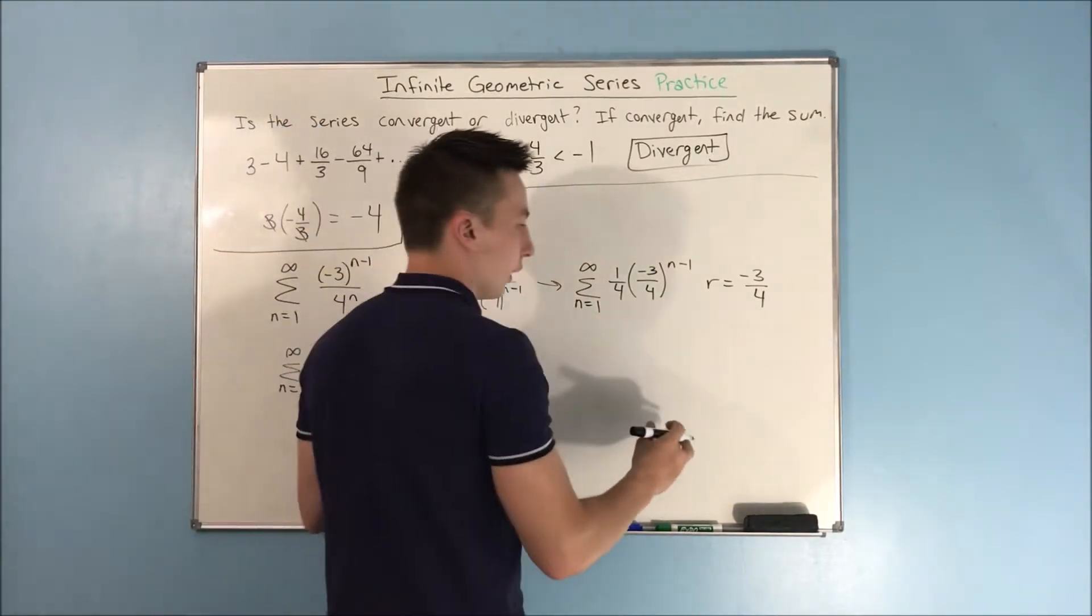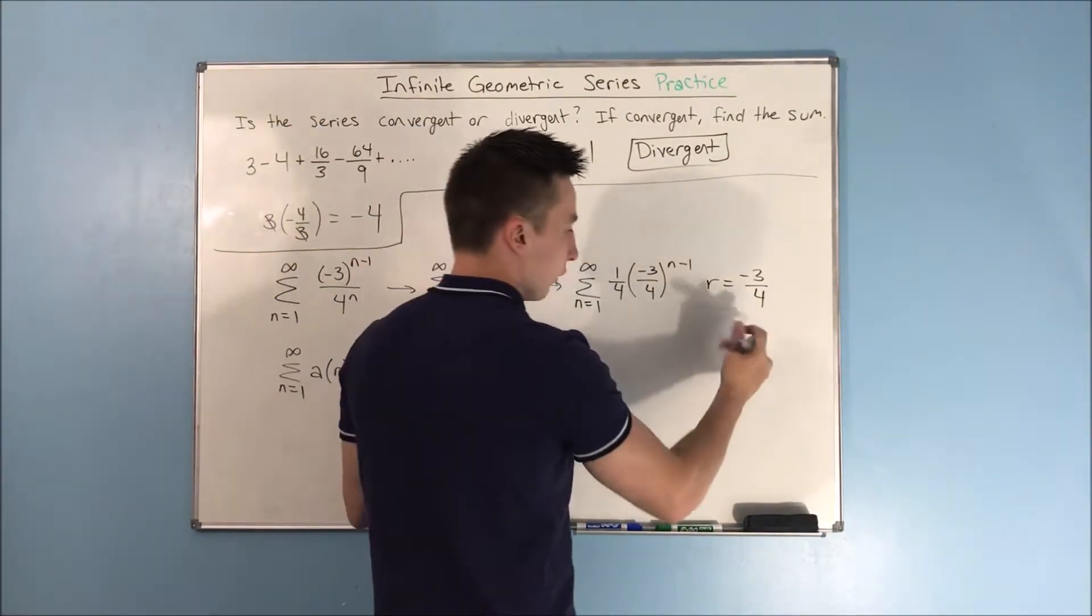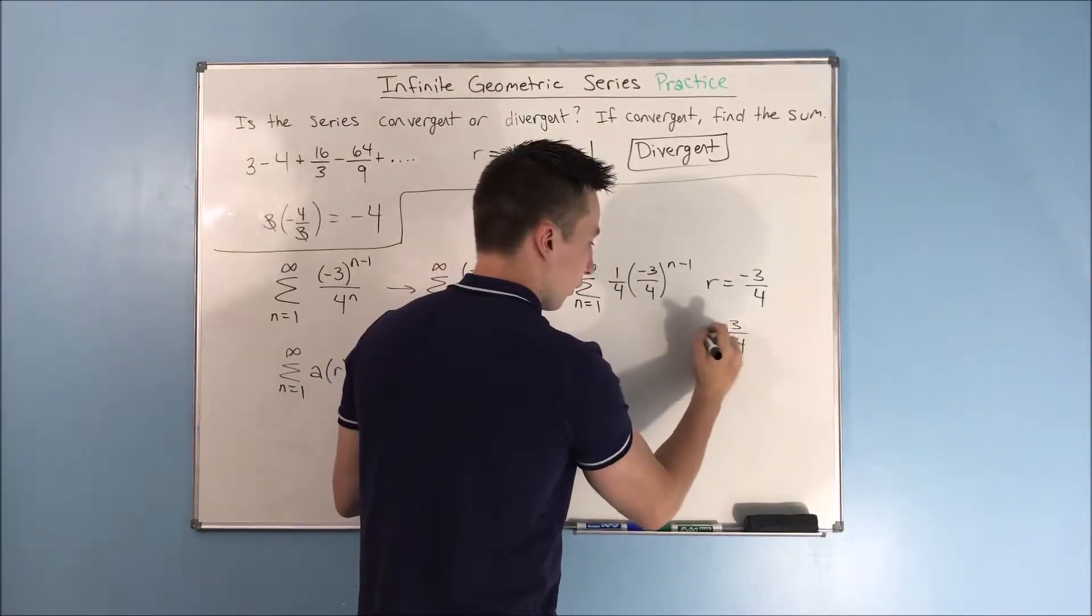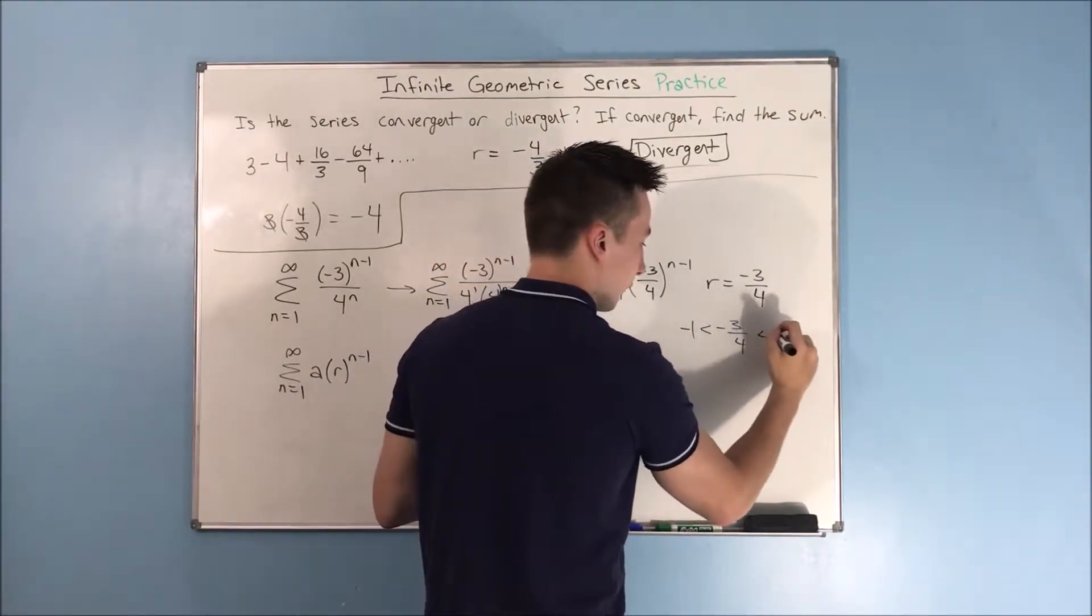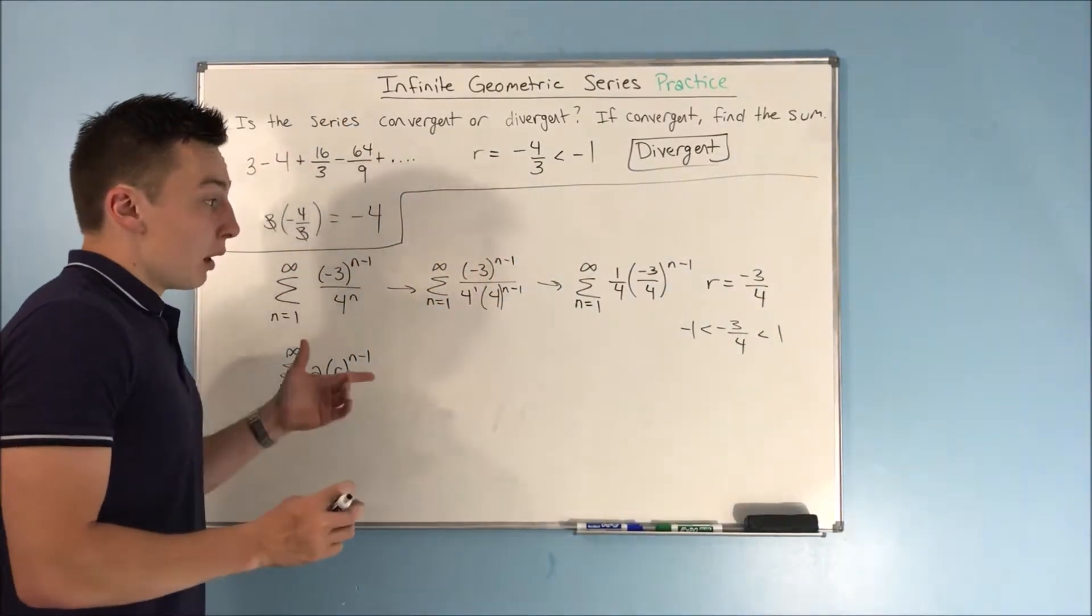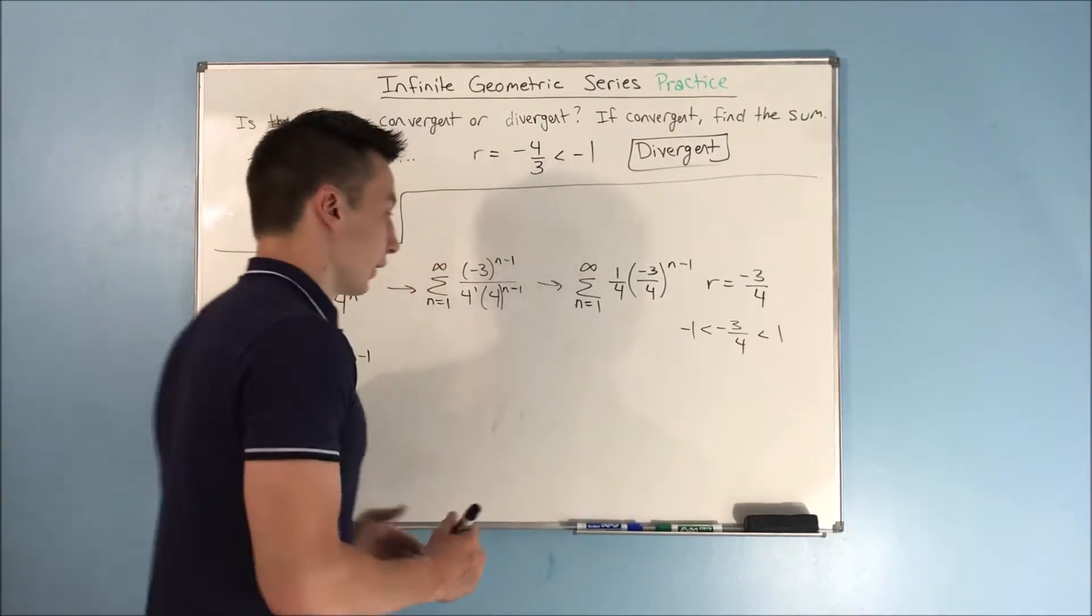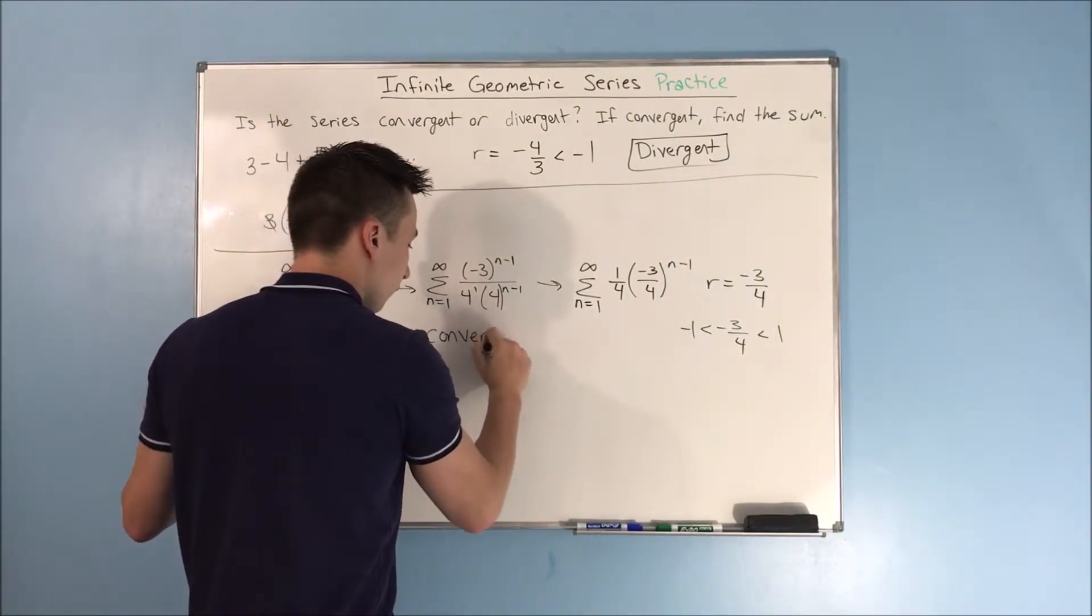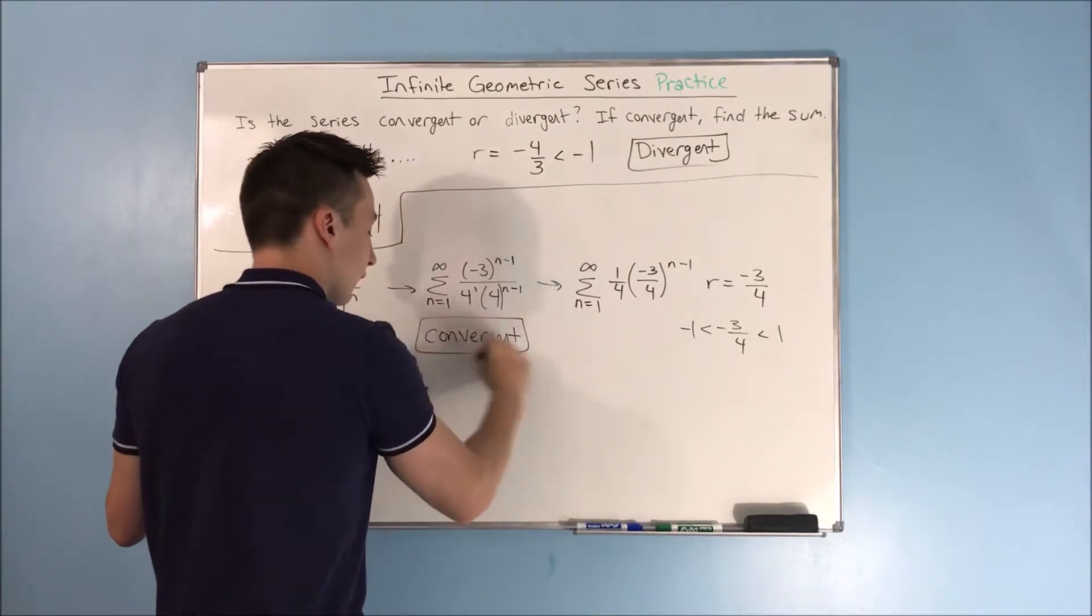You can write negative 3 over 4 is greater than negative 1 and less than 1, if you really want to go about it that way. So great, we know that it's convergent, and now we want to find the sum.